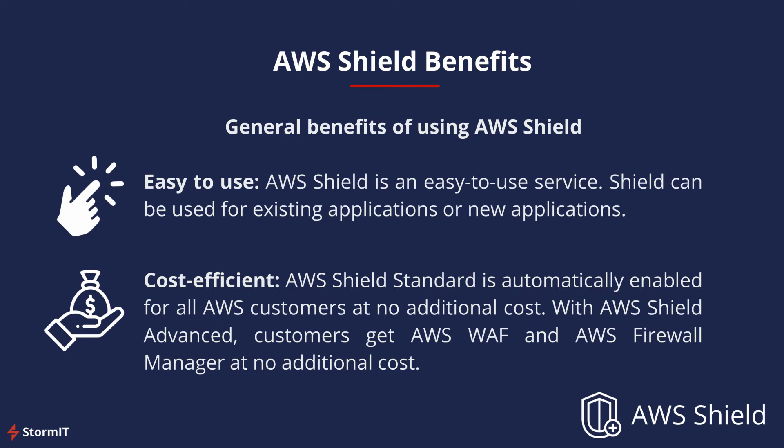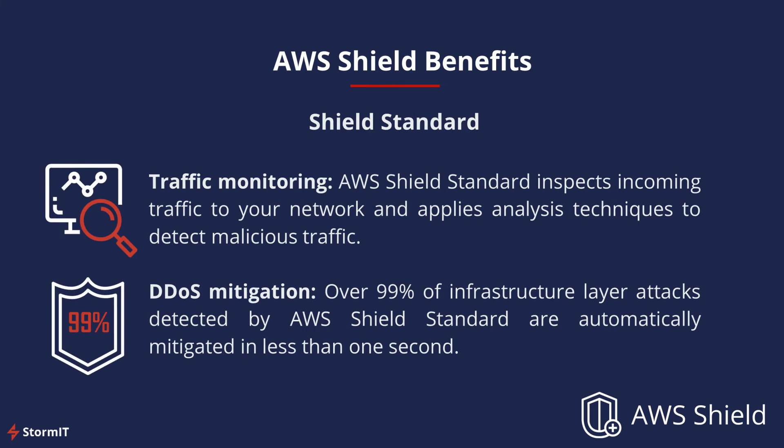Like most AWS services, Shield is easy to use and designed to let you protect your applications quickly. AWS Shield can be used for existing or new applications via the AWS Management Console — no routing changes are required. It is cost efficient: Shield Standard comes at no additional cost, and with Shield Advanced, customers get AWS WAF and AWS Firewall Manager for free. Shield Standard automatically inspects incoming traffic and applies traffic signatures and anomaly algorithms to detect malicious traffic. Over 99% of infrastructure layer attacks detected by AWS Shield are automatically mitigated in less than one second.